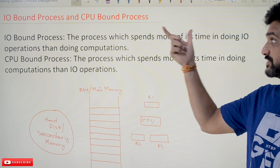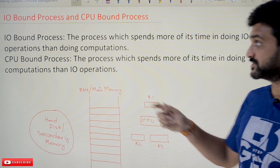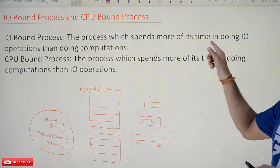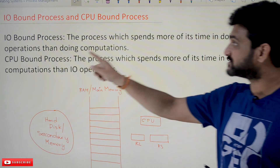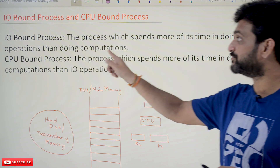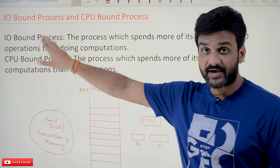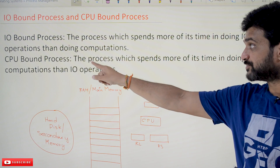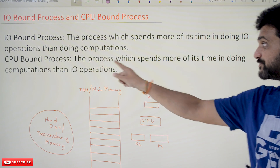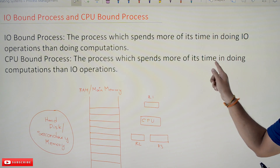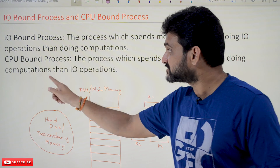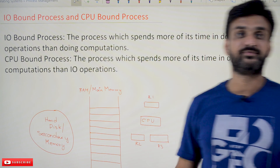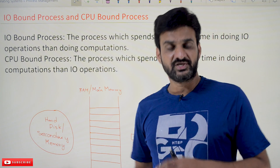What is an IO-bound process and a CPU-bound process? The process which spends more of its time doing IO operations than doing computations is called an IO-bound process. Similarly, the CPU-bound process means the process which spends more of its time doing computations than IO operations — that is what we call a CPU-bound process.